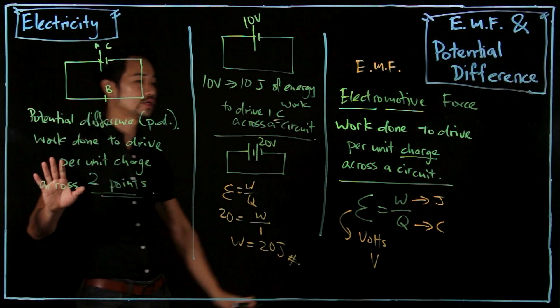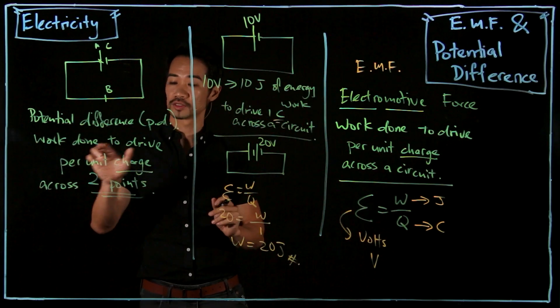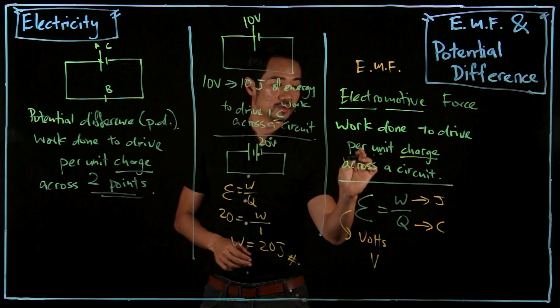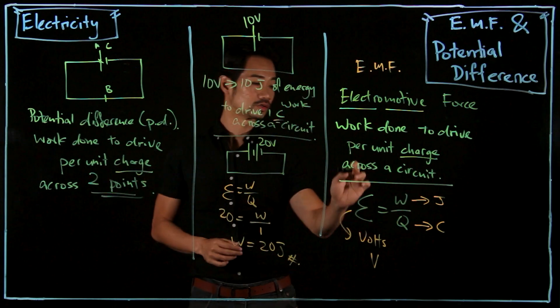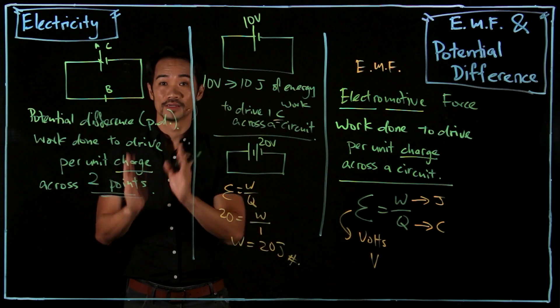You compare this definition with this one. What is the key difference? Work done to drive, work done to drive. Per unit charge, per unit charge. Across the circuit, across two points. So that is the difference.